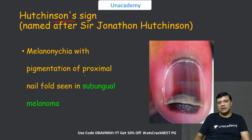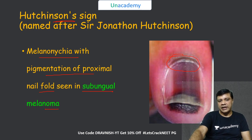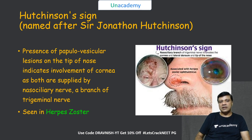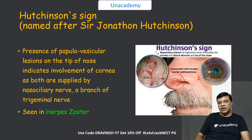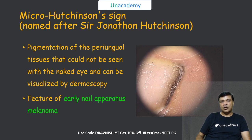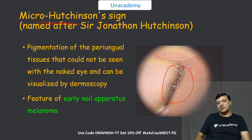There are three Hutchinson signs. The first is seen in subungual melanoma, characterized by melanoma with pigmentation of the proximal nail fold. The second is characterized by papulovesicular eruptions over the tip of the nose in herpes zoster, indicating corneal involvement because both are supplied by the nasociliary branch of the trigeminal nerve. The micro-Hutchinson sign refers to periungual pigmentation visible only with a dermatoscope and is a feature of early nail apparatus melanoma.